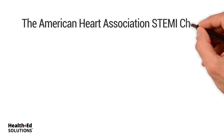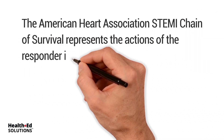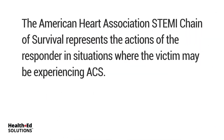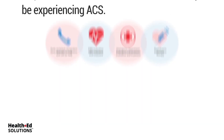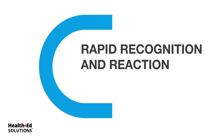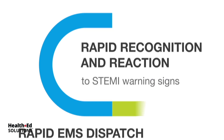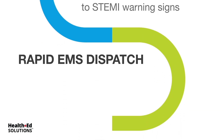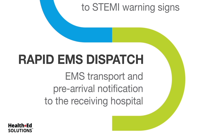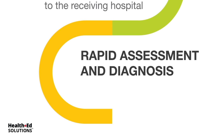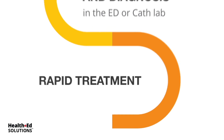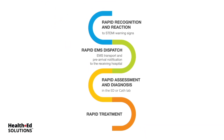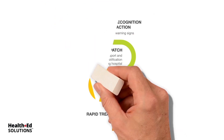The American Heart Association's STEMI chain of survival represents the actions of the responder in situations where the victim may be experiencing ACS. The links include rapid recognition and reaction to STEMI warning signs, rapid EMS dispatch, EMS transport and pre-arrival notification to the receiving hospital, rapid assessment and diagnosis in the ED or cath lab, and rapid treatment. This was developed keeping in mind the role of both family members and healthcare providers.